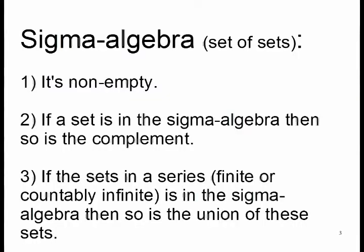You can run into several difficulties when describing probabilities in such realms. First off, you want to avoid taking probabilities or other measures on every possible set. Mathematical measure theory does, however, give us a description of what sets to consider. This collection of sets — i.e., a set of sets — needs to be a so-called sigma algebra, which means: first, it's not empty; second, if a set is in the sigma algebra, then so is its complement; and third, if the sets in a series, finite or countably infinite, are in the sigma algebra, then so is their union.